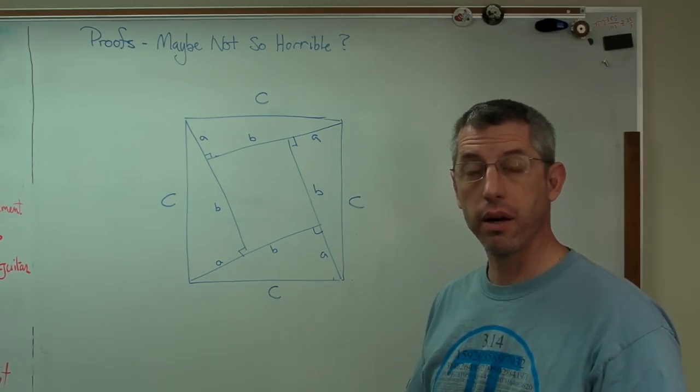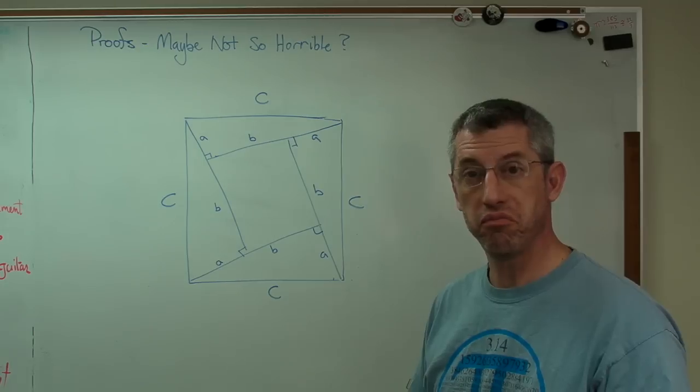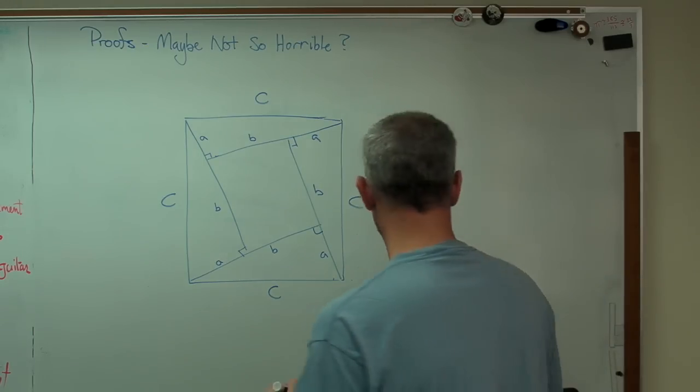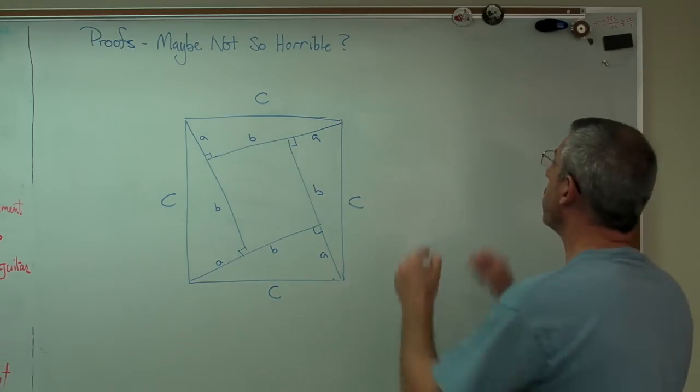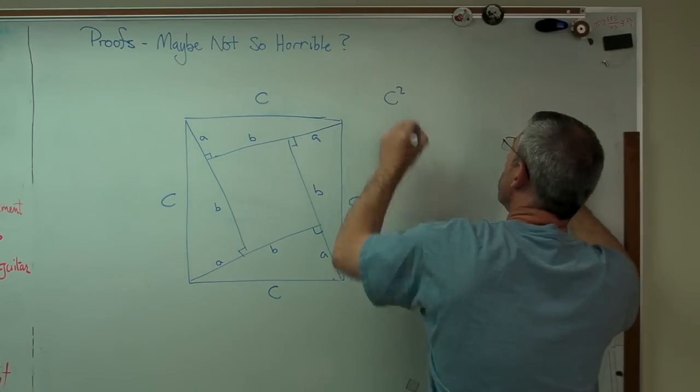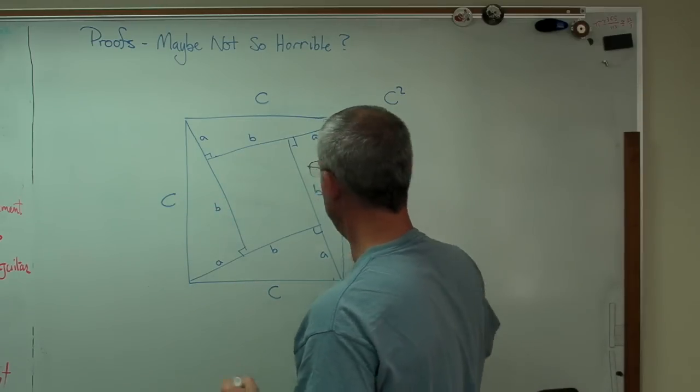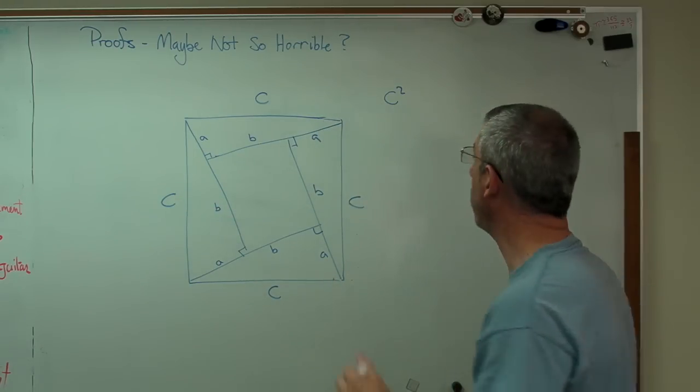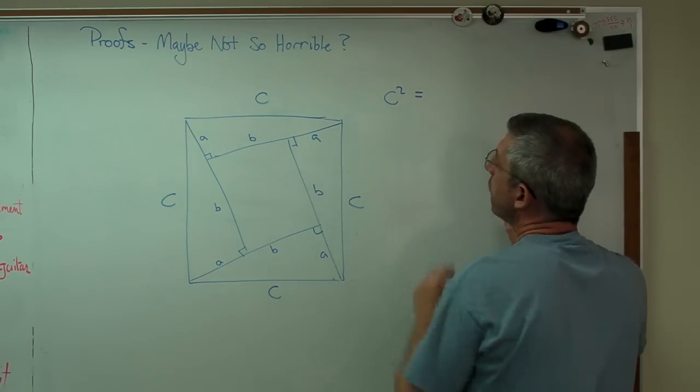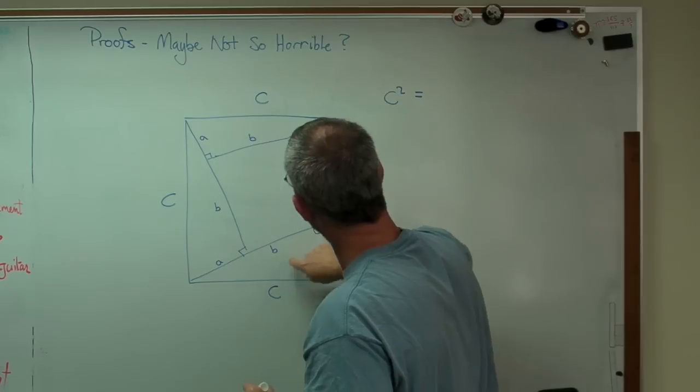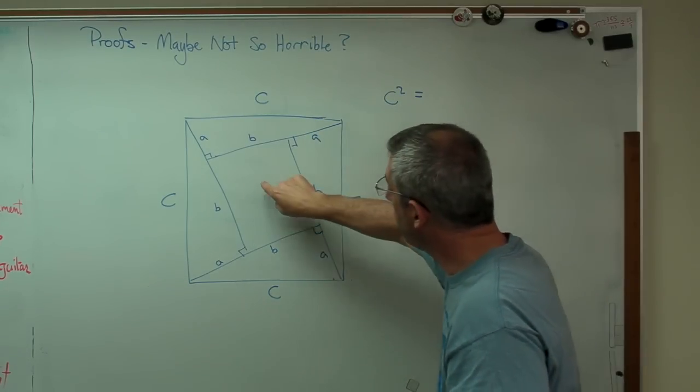Let's figure the area of this square out two different ways. So here's one way to do it. C squared. C, C, C. C squared is one way to find the area. Here's another way to find the area. Four times the area of that triangle plus that.